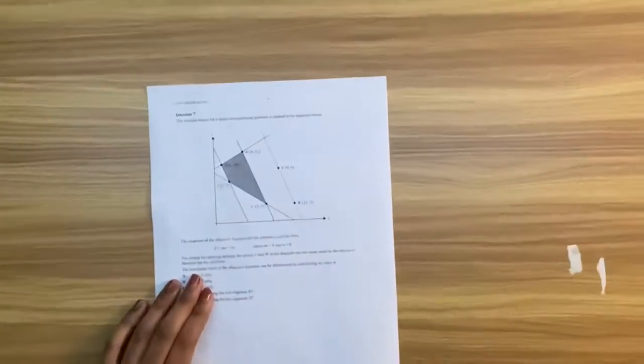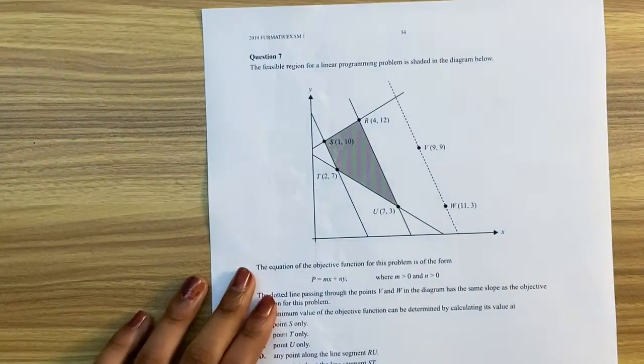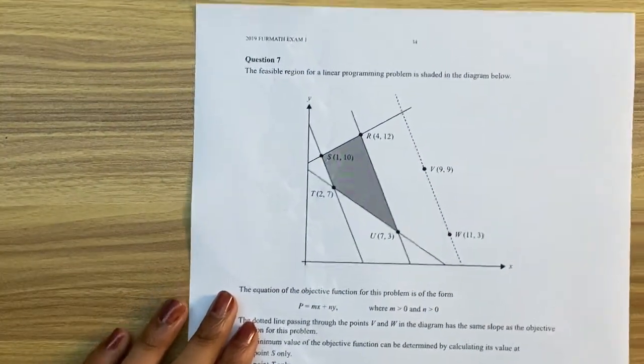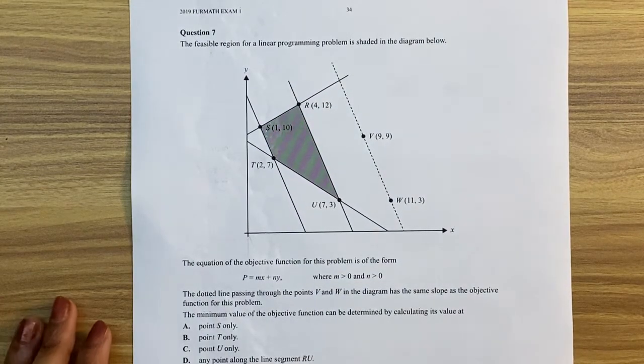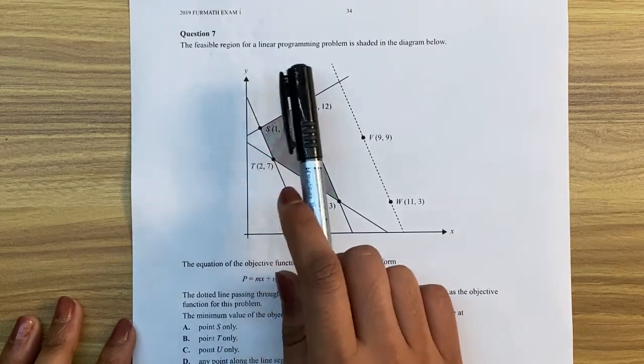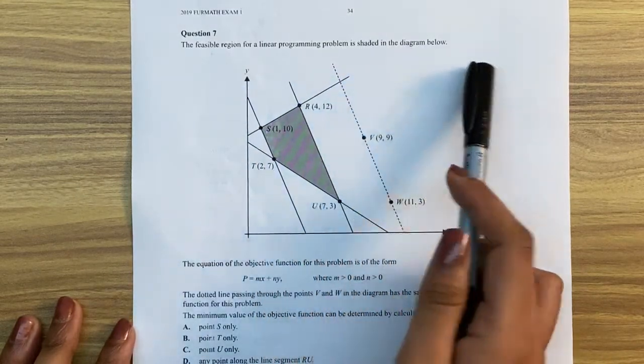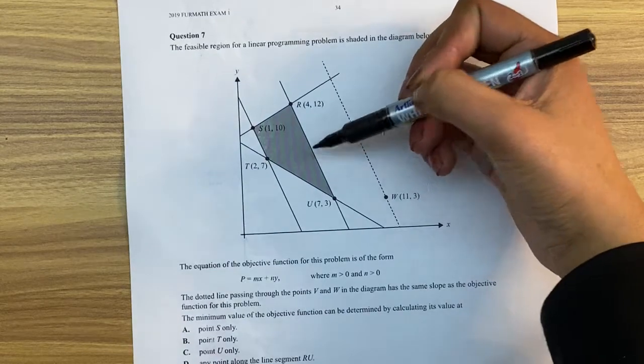Alright, let me zoom into this. There we go. Alright, so the question says, this is taken from a Vicar paper, the feasible region for a linear programming problem is shaded in the diagram below. So this one here, that is our feasible region.